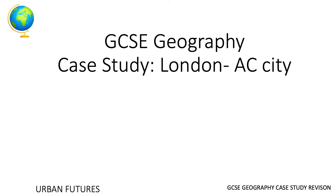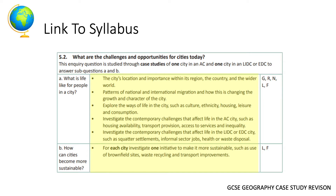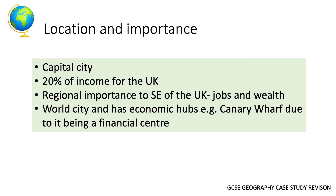Welcome to another geography revision video. This video is one of our GCSE case studies based on London, which is our example of an AC city. It links to the urban futures topic and spans two different parts of the syllabus: 5.2a and 5.2b — the second section being how cities can be more sustainable.